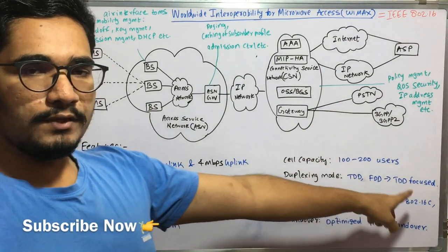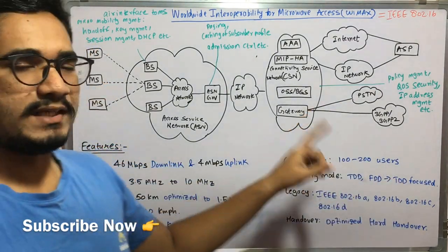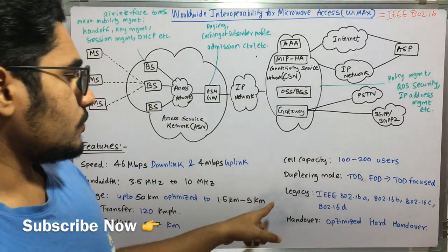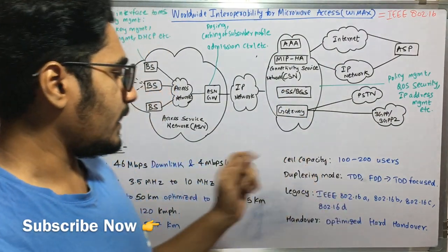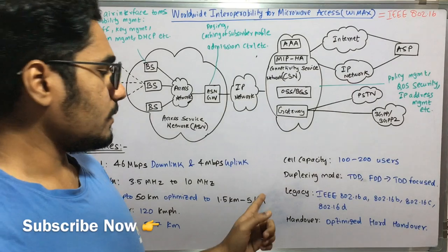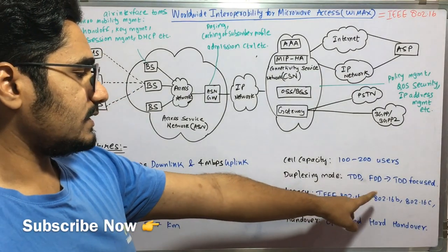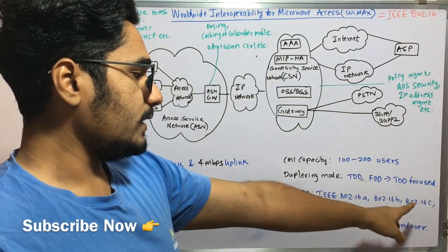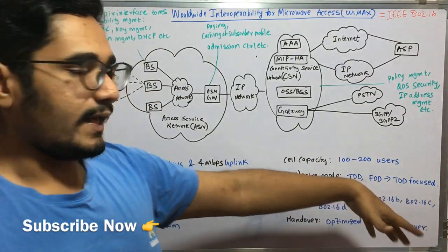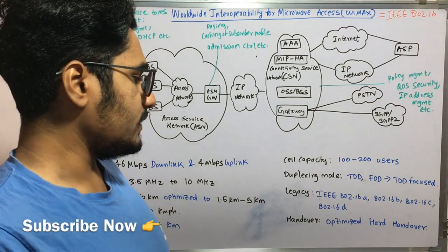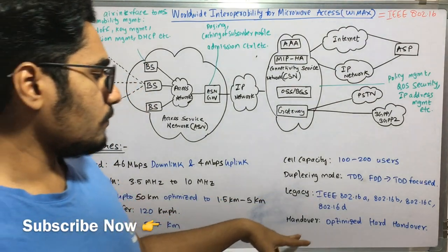Next up the legacy protocol. So legacy is actually the standards which are there or which are seen in IEEE 802.16. So it has 802.16a, 802.16b, 16c and 16d. So different legacies have different functionalities that we'll see.